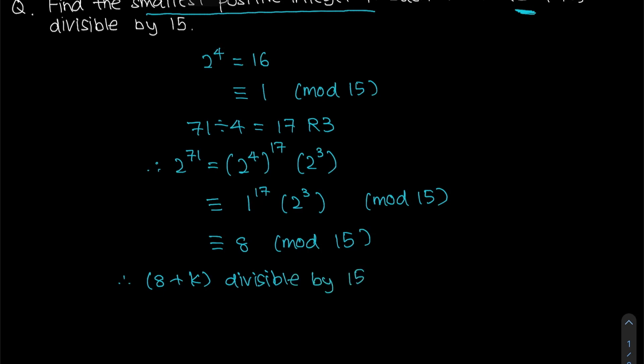And we know that 8 plus k is divisible by 15, which means to say that your k must effectively be equal to 15 minus 8, which is equal to 7, which is a positive integer. So k equals to 7 is your answer.